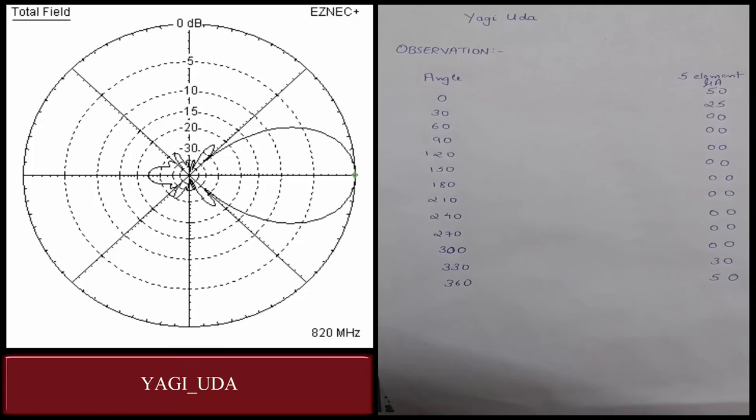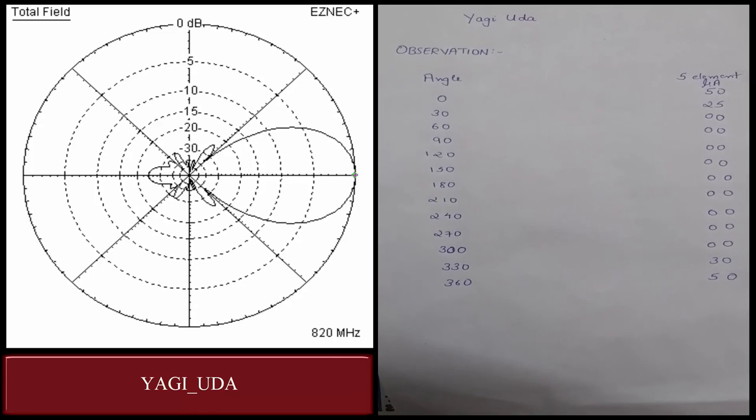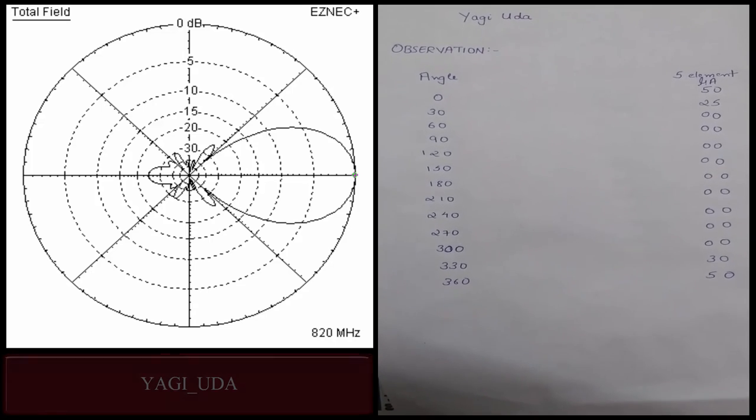Since it is a Yagi-Uda antenna, it is highly directional, so we are getting radiation only in one direction. That's it for the Yagi-Uda antenna. Thanks for watching.